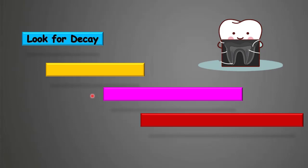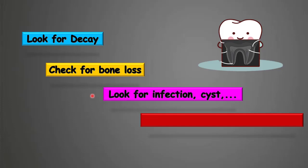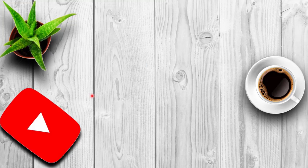Looking for decay — x-rays help your dentist find small areas of decay in the teeth or below a dental filling. Looking for bone disease, like periodontal disease, where inflammation of the gums attacks the bone and causes bone loss. Looking for tooth infection, cysts, or tumors inside the jaws. And examining the area before any procedures, like wisdom teeth surgery or having an implant.